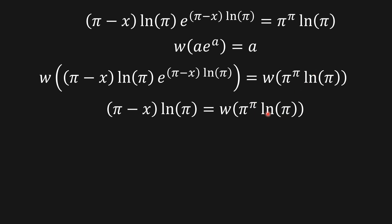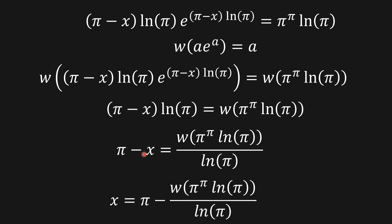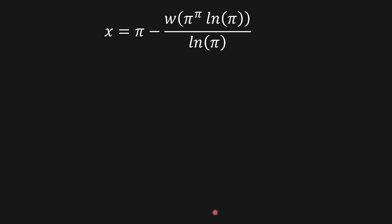Now I'll divide both sides by ln of π and isolate x. We get that x is equal to π minus the W function of this expression, all divided by ln of π. This is not something we can calculate manually — we have to plug it into Wolfram Alpha.